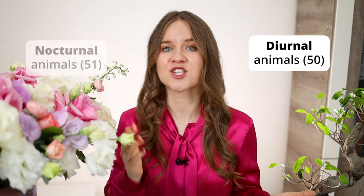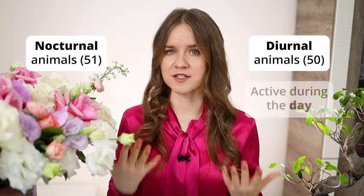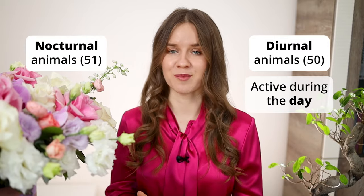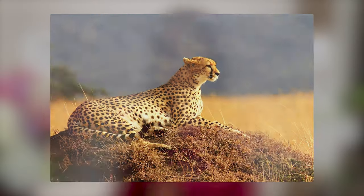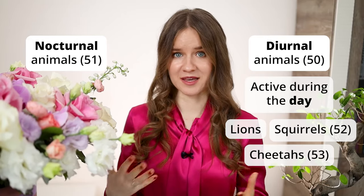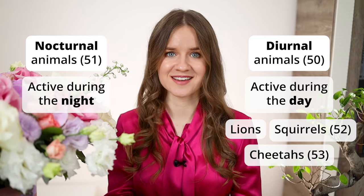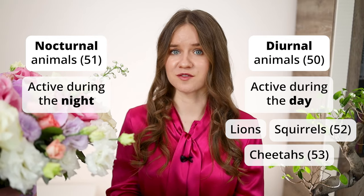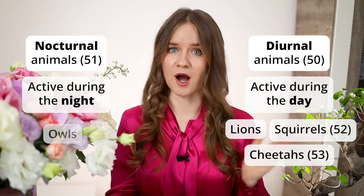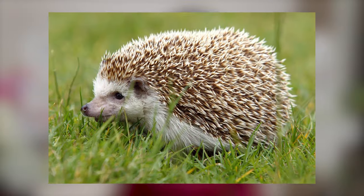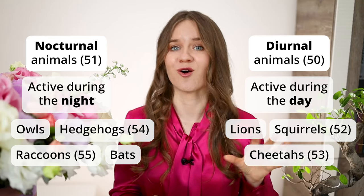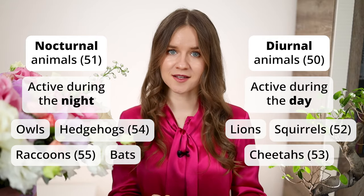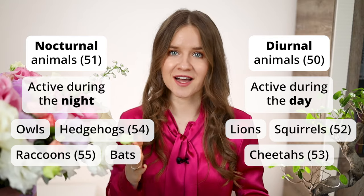Animals can also be diurnal and nocturnal. Diurnal animals are those that are active during the day – for example, lions, squirrels, cheetahs. Nocturnal animals, as you may have guessed, are active during the night. Some common examples of nocturnal animals are owls, hedgehogs, raccoons, and bats. So, diurnal is active during the day, and nocturnal is active during the night.